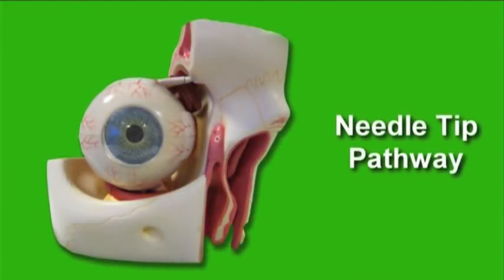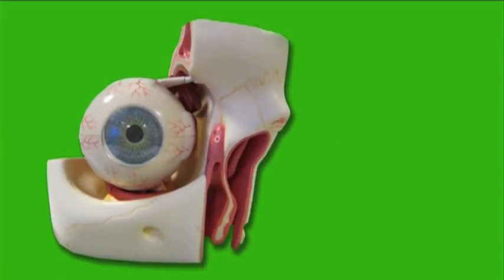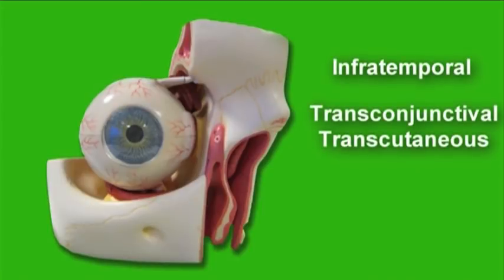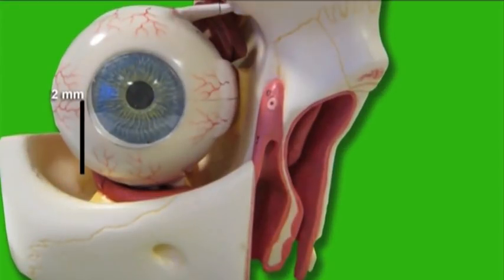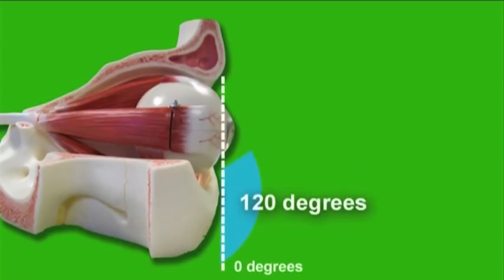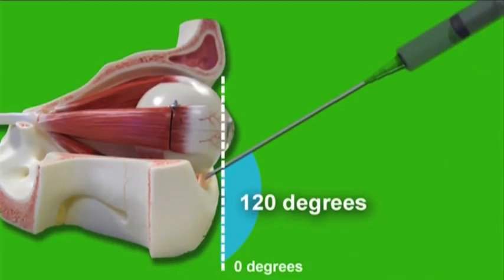Stage 1. With the eye positioned in either a primary gaze position or, as described by Gills and Lloyd in their technique, an upward gaze position, an infratemporal transconjunctival or transcutaneous needle insertion is made with a 25-gauge, 1-inch needle with its bevel towards the globe, approximately 2 mm lateral to the lateral limbic margin and approximately 2 mm inferior to the globe. The needle tip is directed at a 120-degree angle towards the orbital floor and inserted through the conjunctiva or skin approximately 2 mm.